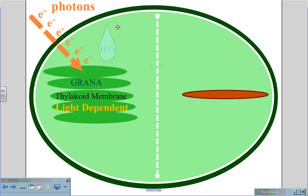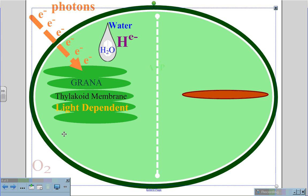In this process the thylakoid membrane is going to break apart water, and in the breaking apart of the water we are going to get a hydrogen atom, which will pick up those excited electrons, and we will also release some oxygen out into the atmosphere.